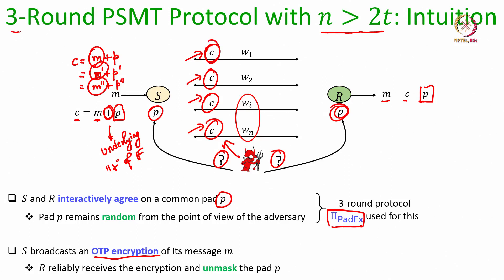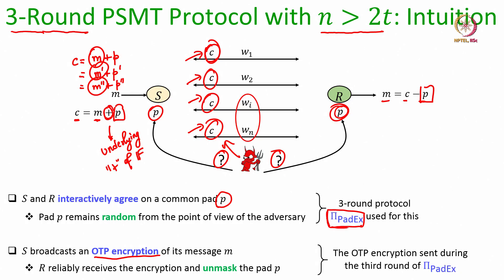That is not the case, because overall we require the PSMT protocol to be a 3-round protocol. What we will do is run the pad exchange protocol in parallel with the OTP encryption communication, where the OTP encryption will be communicated by the sender during the third round of the pad exchange protocol. Recall that in the pad exchange protocol, A sends polynomials to B during round 1, B sends back the conflict list during round 2, and during the third round A sends the identity of the faulty wires to B. It is during this third round that the sender will also include the OTP encryption.